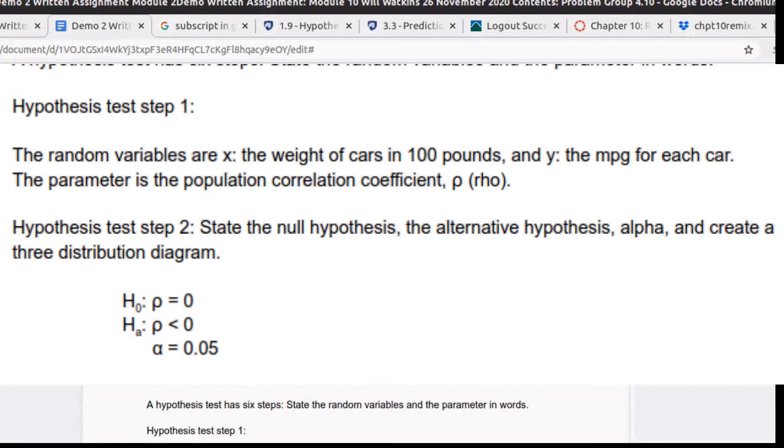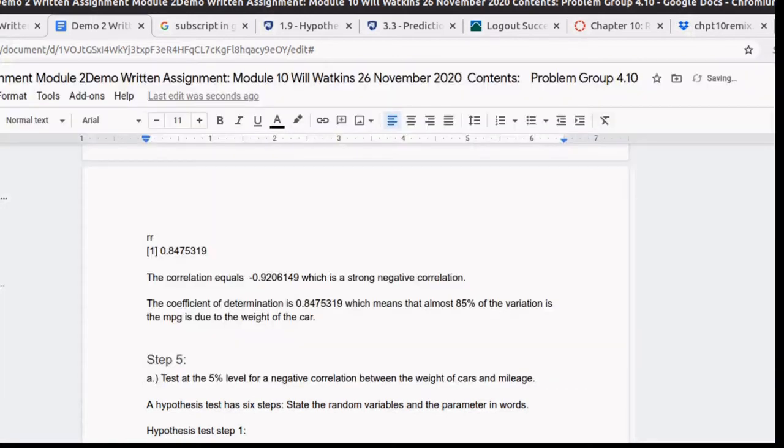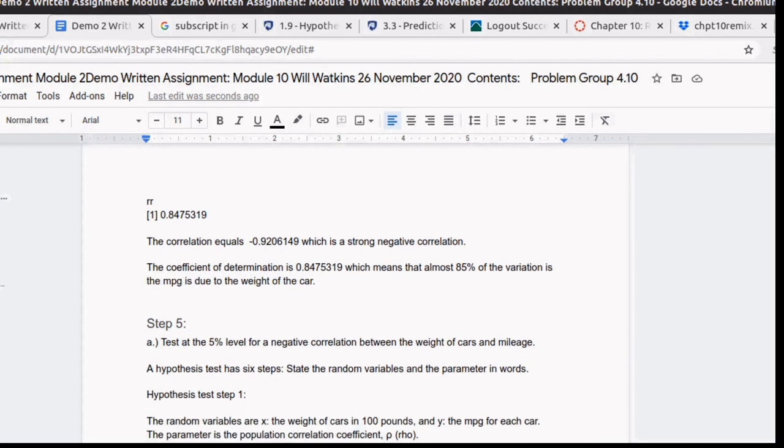Rho is less than zero. How did I know that was less than zero? See, the question was here, test at the five percent level for a negative correlation. So alpha is five percent. Now I need to put in a... oh, I need a three distribution diagram.